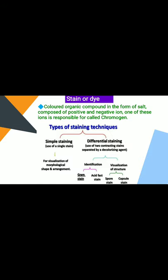Differential staining is further classified into identification stains — done by gram stain and acid-fast stain — and visualization of structure stains, done by spore stain, capsule stain, and flagella stain.